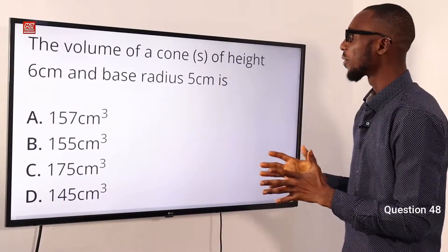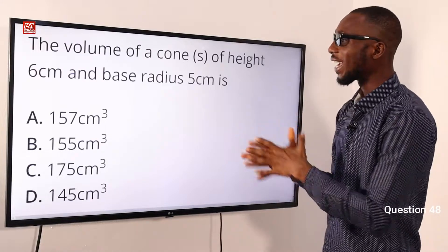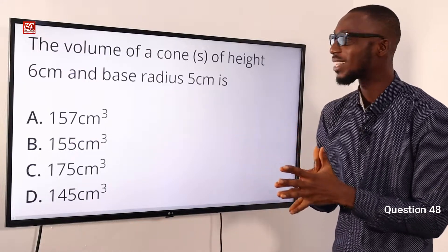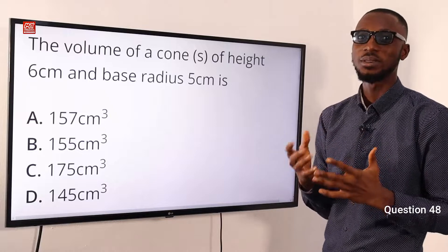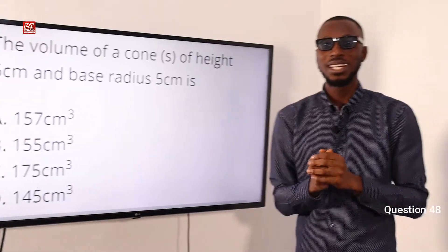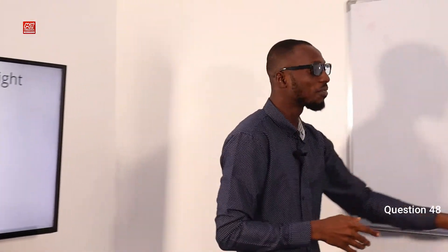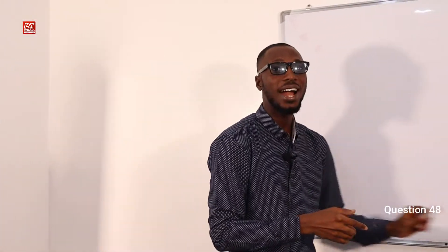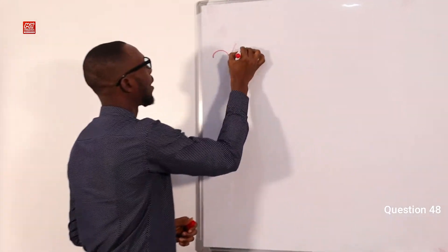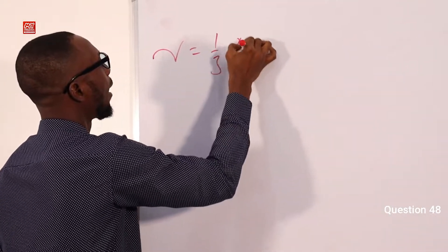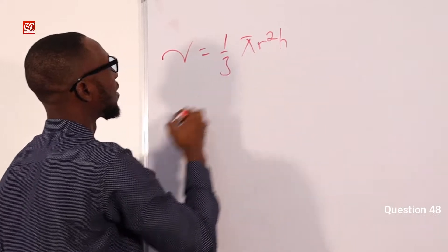The volume of a cone of height 6 cm and base radius 5 cm is what? We should remember that the volume of a cone is V equals 1 over 3 pi r squared h.